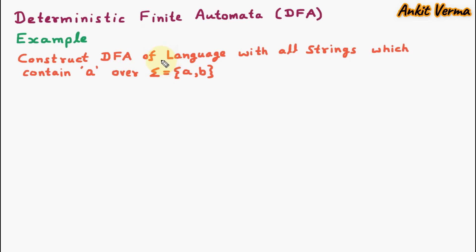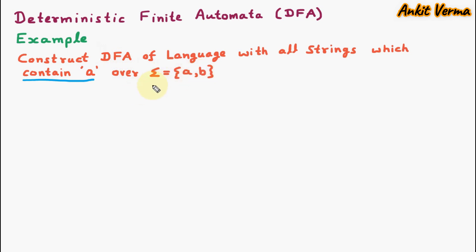Hello everyone, my name is Ankit Verma and today we are learning an example of deterministic finite automata, which is DFA. Here we construct a DFA of a language with all strings which contain 'a' over sigma equal to {a, b}. Here the important thing is strings which contain 'a' — we have to take those strings and for that language we have to construct the DFA. The input alphabet given is sigma = {a, b}, where a and b are symbols and sigma is the alphabet.